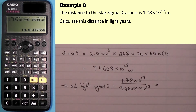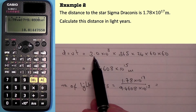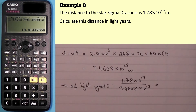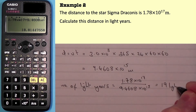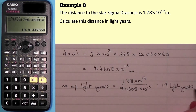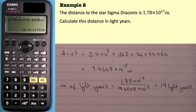That calculation gives us our result. The value 1.78 times 10 to the power of 17 has three significant figures, but we had to use the speed of light from the data sheet, which is written to two significant figures. So we could write the answer as 18.8 light years, but I'm going to round it to 19 light years. Both 19 and 18.8 would get the marks.